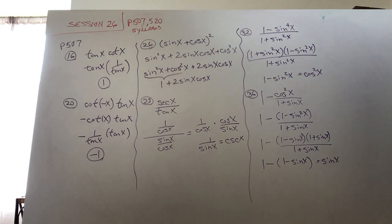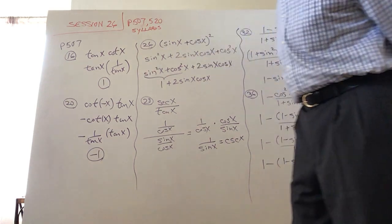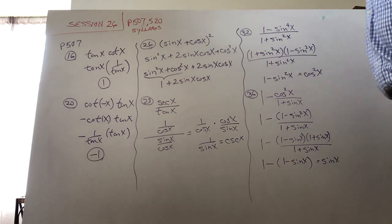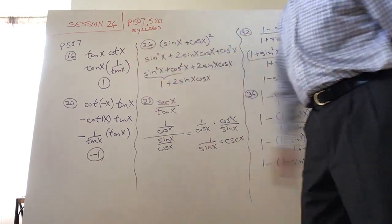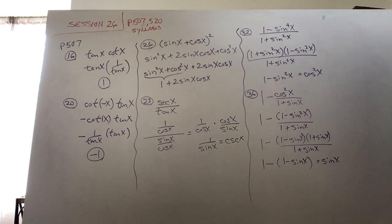On number 16, we'd like to simplify tan x times cot x. You should recognize that tan x and cot x are reciprocal functions, so change one to the other — cot x becomes 1 over tan x — and then multiply those, and you get one as a nice quick answer. In fact, many of these will be quick.